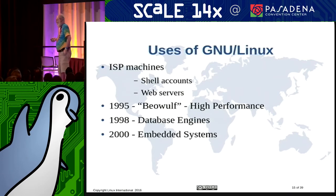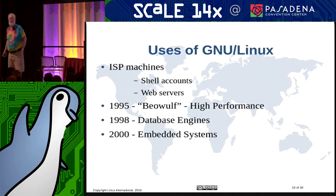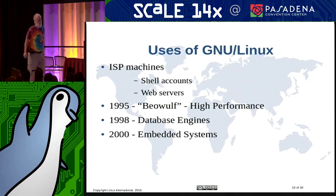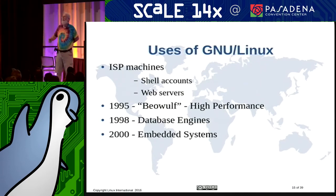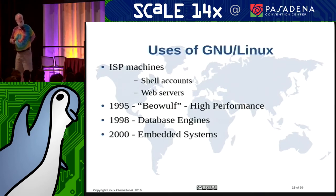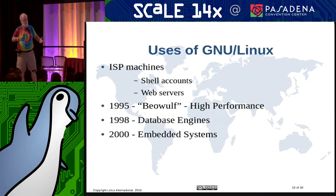In 1998, Informix announced they were going to port their database engine to Linux — and not only announced it but released code on the same day. That was overshadowed by Oracle, who found out and announced that sometime in the future Oracle would port to Linux, taking all the press away from Informix. But over the next couple of months, all the database companies ported, and this gave a vision of legitimacy to Linux.